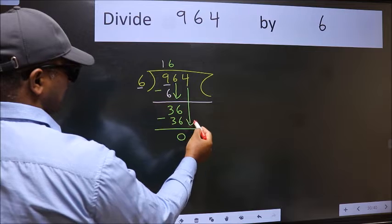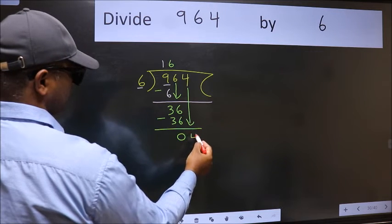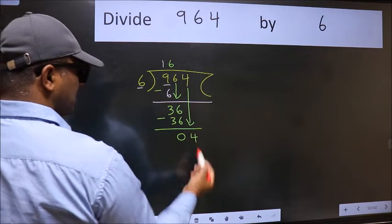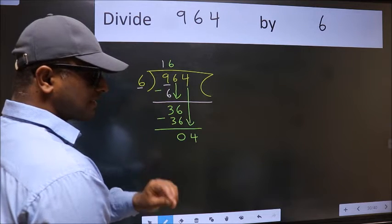After this, bring down the beside number. So, 4 down. After this step, the mistake happens. And the mistake is this.